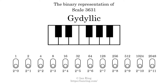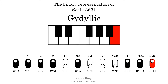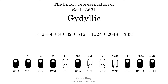The binary representation of this scale is determined by mapping tones of the scale to binary digits. Each binary digit represents a power of 2. To get the scale number, we add the powers of 2 together. The powers of 2 that are present in the scale, all added together, equals 3631.